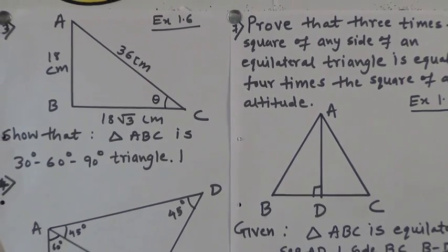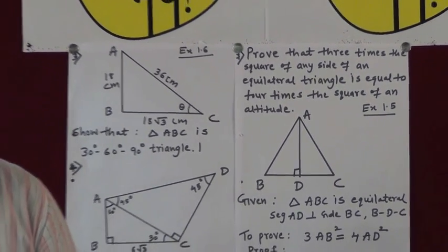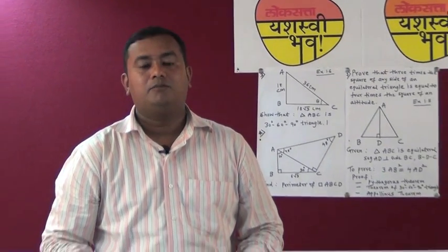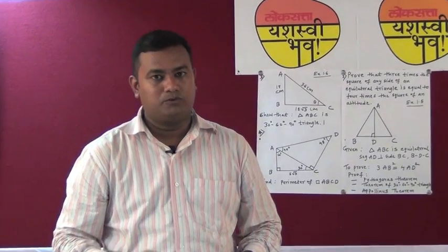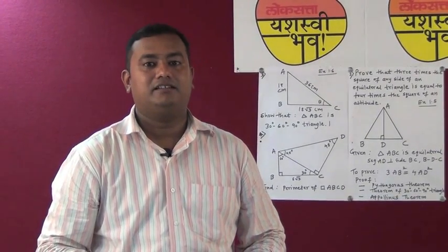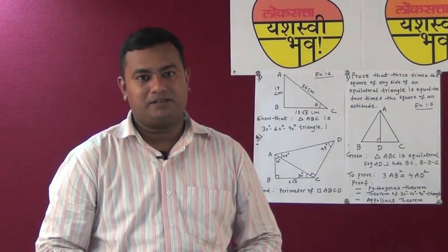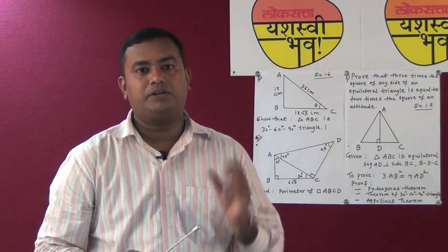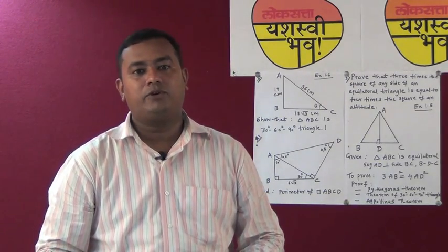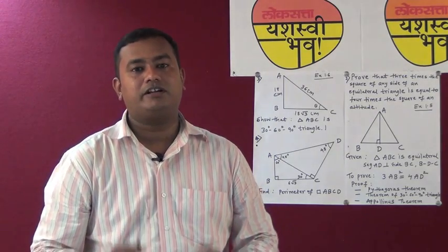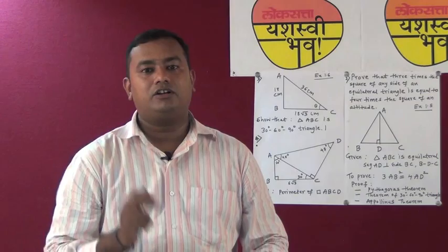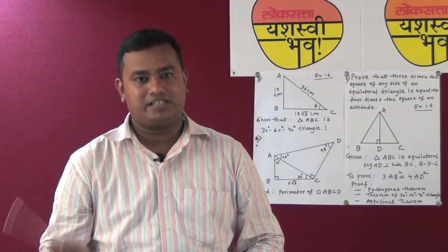There are various theorems given in the first two chapters, and for theorem proofs the method has to be the textbook method only. But for a sum or any proof, any logically and technically correct method is accepted. Here I am going to give you a few examples where you can solve one particular sum by different methods. You are going to appear for the board exam with the entire textbook, so it is not necessary that if a sum is given in a particular chapter, you cannot use a method from the next chapter.